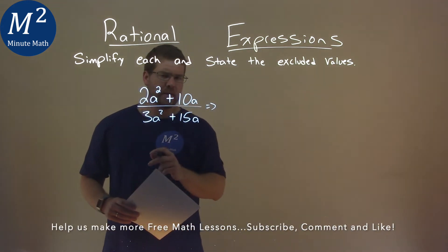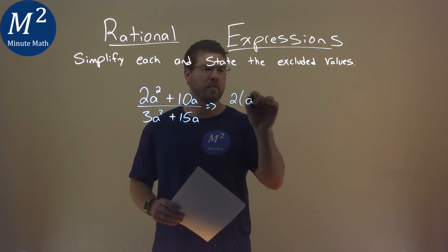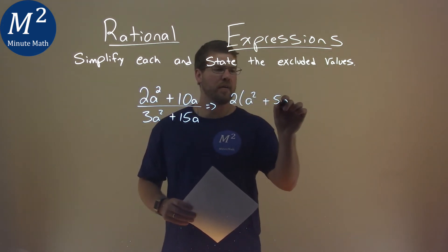Well, I'm going to try something here. I'm going to pull a 2 out of my numerator. If a 2 comes out, I'm left with an a squared plus 5a, right?